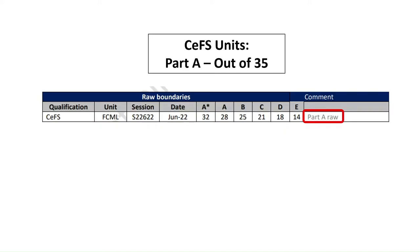So in front of you, you can see for Unit 2, which was the exam taken in June 2022, the grade you needed out of 35 in the Part A paper was 32 out of 35 for an A star, 28 for an A, 25 for a B, etc. In terms of percentages, the percentage you need — this is remember for Part A — 91% for an A star, 80 for an A, 71 for a B, etc.